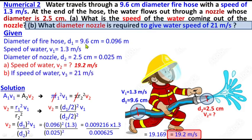Part b: What diameter nozzle is required? We need to find the nozzle diameter if we want the water speed to be 21 meters per second. The previous answer was 19.2 meters per second, which wouldn't reach as far. To increase the speed, we need a smaller nozzle. Since we've used A₁V₁ and A₂V₂, we'll now use A₃ and V₃.